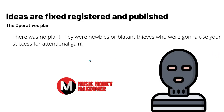Here's the last category: ideas are fixed, registered, and published. What's the operative's plan? There was no plan — they were either newbies or blatant thieves who were going to use your success for attention or gain. The people who steal copyrighted works know exactly what they're doing. It was just a quick plan: 'We're going to use this, sample it, put it out for free, and if it catches on it catches on. If they sue us, whatever — but now we're known.' That's what most people do when they take copyrighted works.